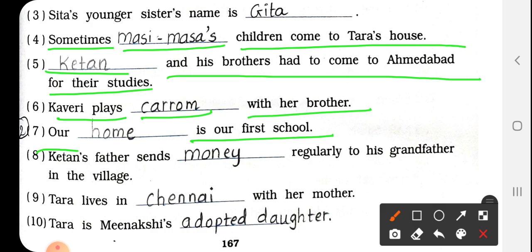Number 7: Our Dash is our first school. हमारी सबसे पहली school जहां से हम learning करते हैं — वो क्या है? So it is our home. We have to write here H-O-M-E — Home.